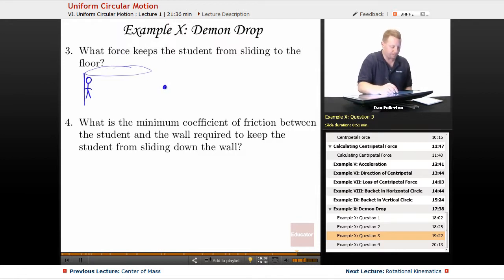If I draw a free body diagram from the side, we have weight down, normal force from the wall, and we must have force of friction. So what keeps a student from sliding to the floor? It must be the force of friction.